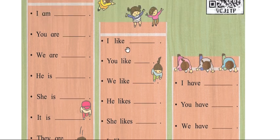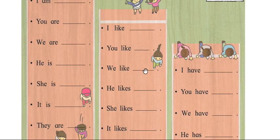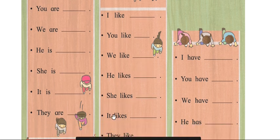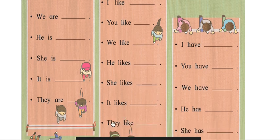Move to track 2. I like mango. You like cake. We like banana. He likes playing. She likes singing. It likes dancing. They like reading.